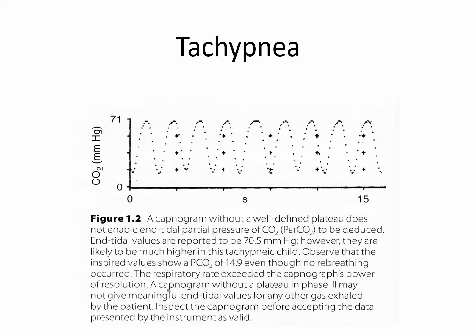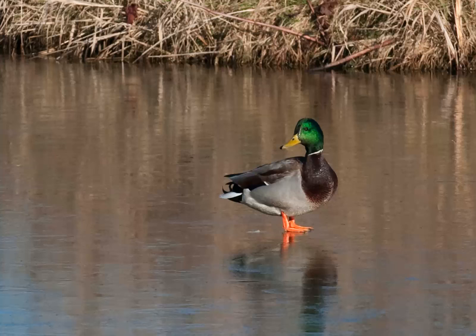Tachypnea presents a problem, mostly in pediatric patients. If the respiratory rate is very rapid, the CO2 waveform doesn't have an opportunity to return to baseline, making it appear as though the patient is rebreathing. There is also a problem at the peak: because the waveform hasn't actually reached a plateau, it may not give meaningful end-tidal CO2 values. The bottom line from all these waveforms is that you should not just look at the digital value of end-tidal CO2 — you really ought to look at the waveform itself in order to establish a diagnosis. That is the end of the podcast on capnography.